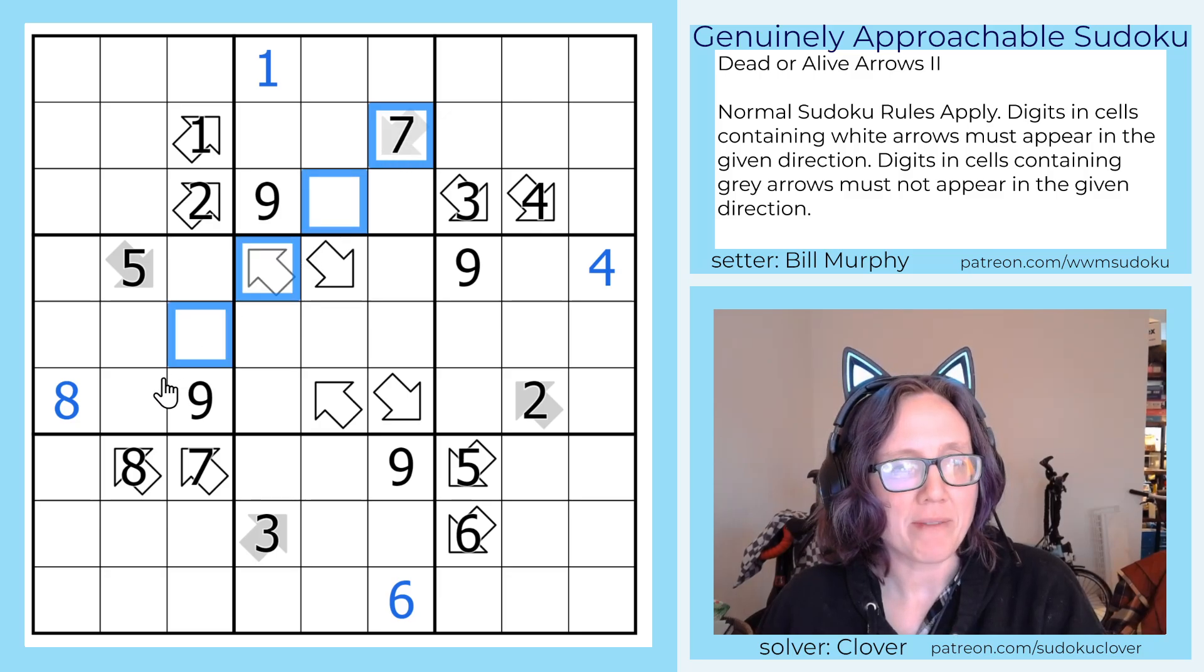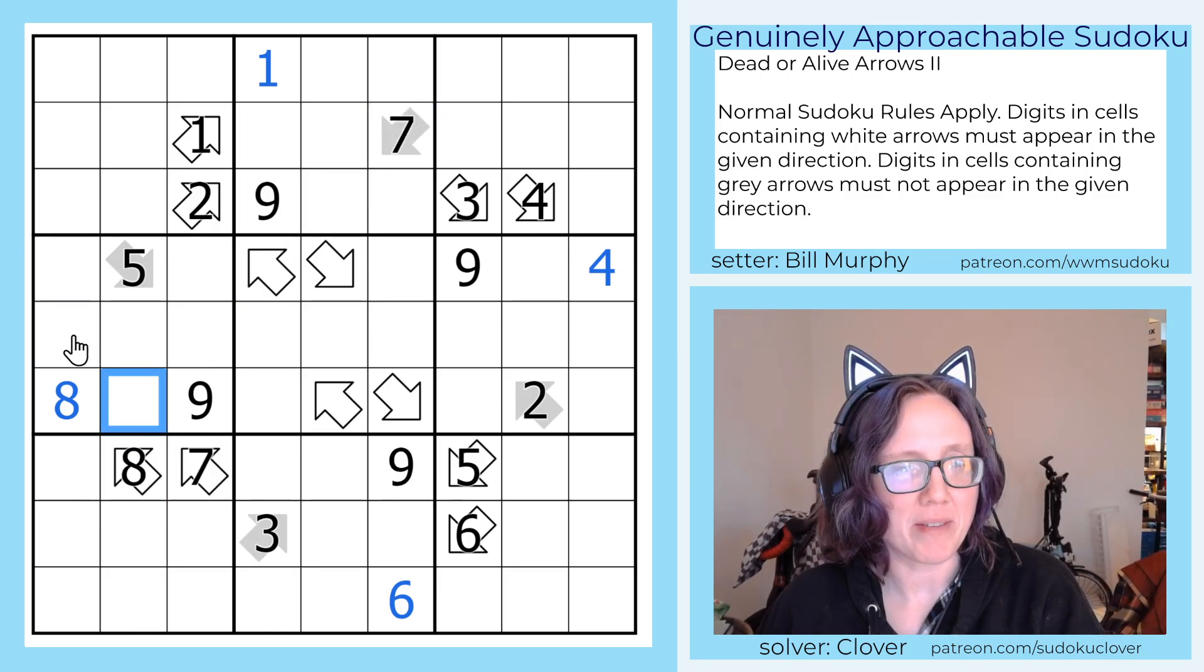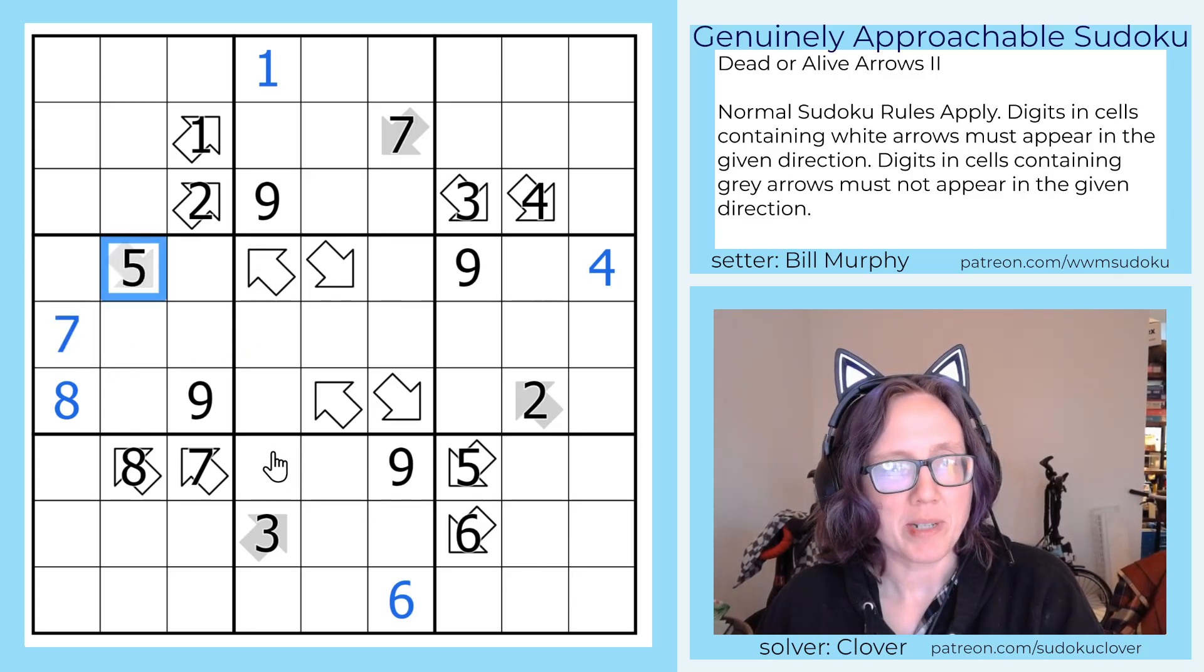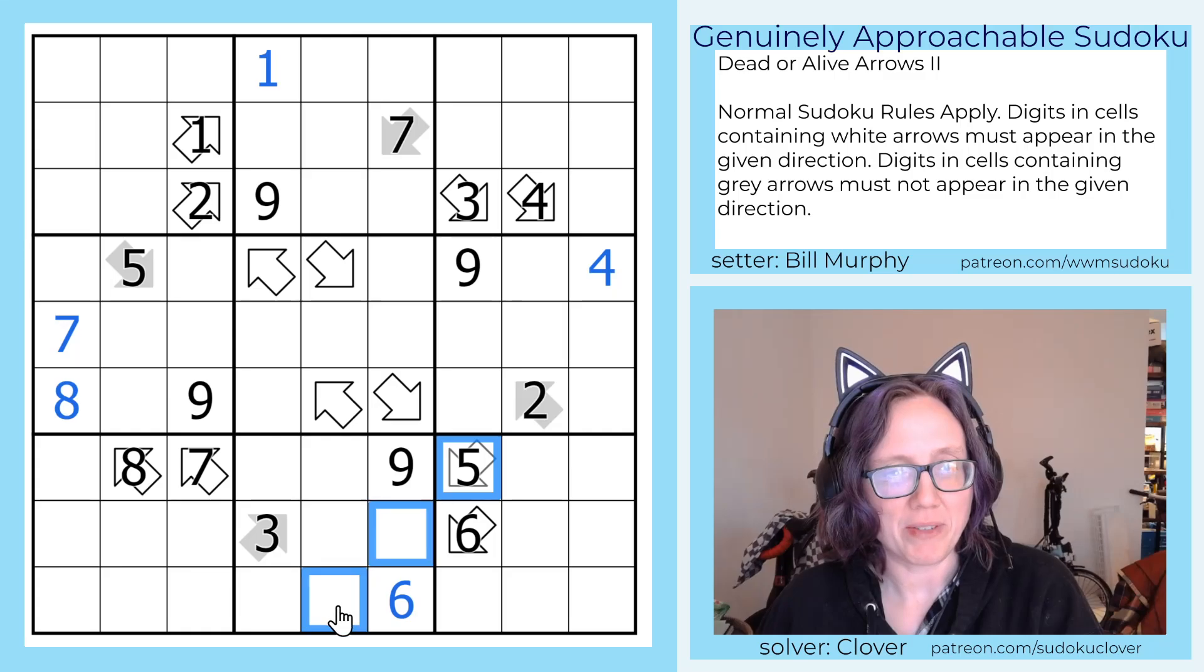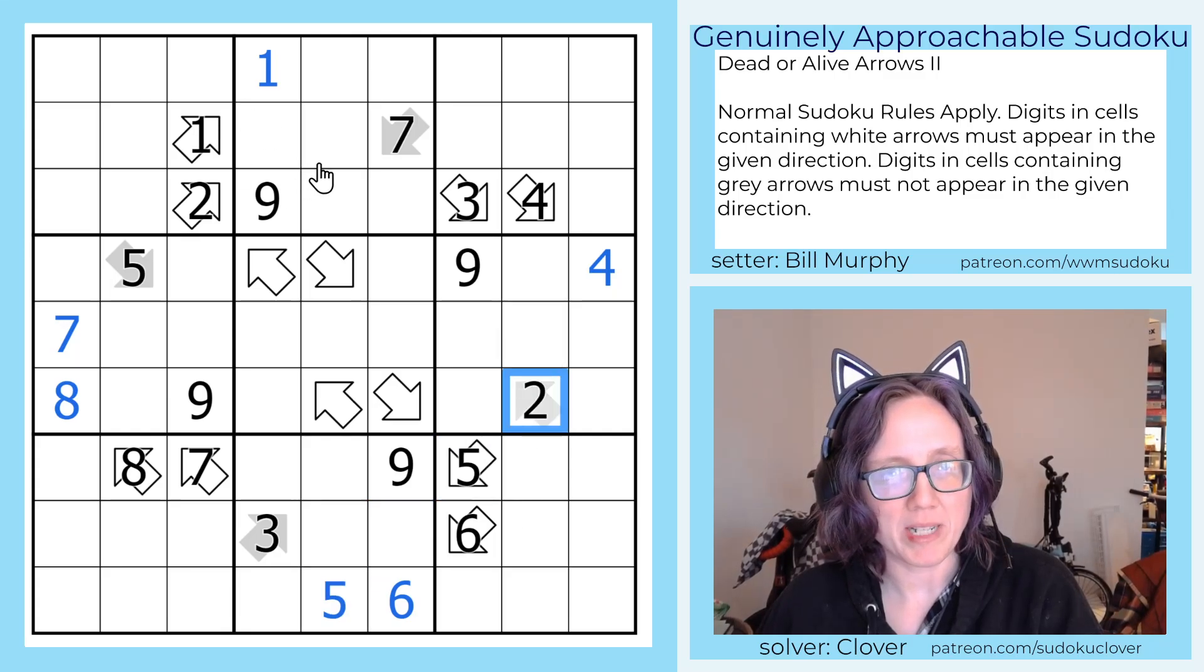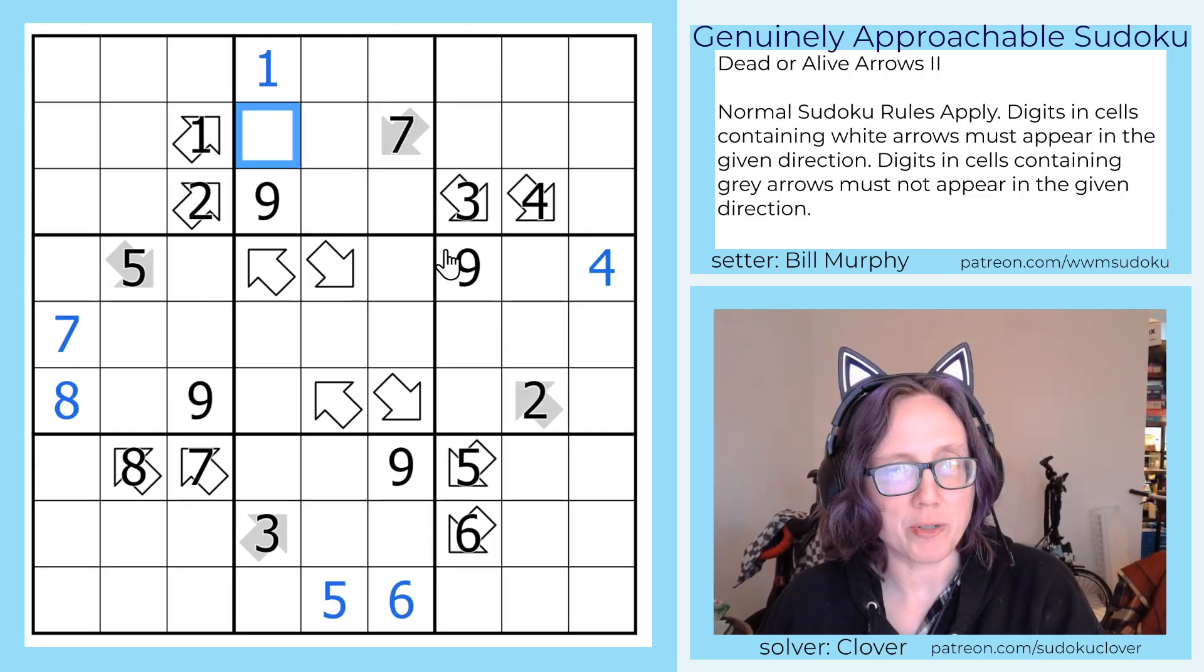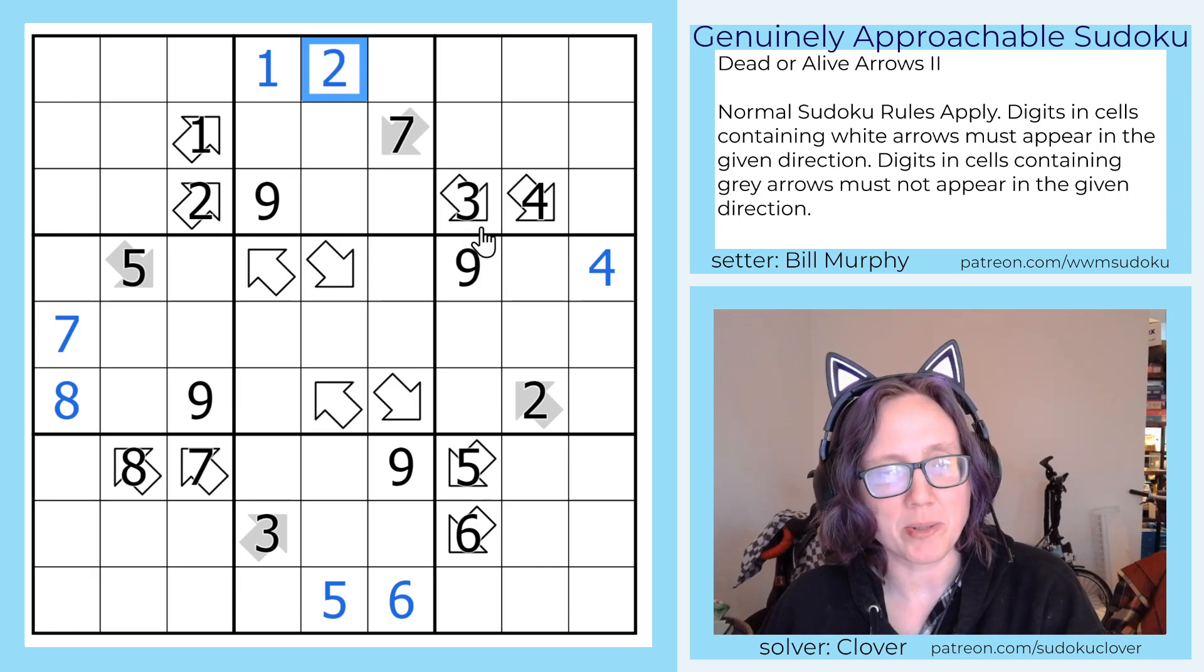This gray 7 means that there can't be a 7 here, but there has to be a 7 on this line, so it must go there. This gray 5 means there is no 5 here, but there has to be a 5 on this line, so it goes there. This gray 2 means that there is no 2 there, but there has to be a 2 on this line, so it goes there. And this gray 3 means no 3 here, but there has to be a 3 on this line, so it goes there.